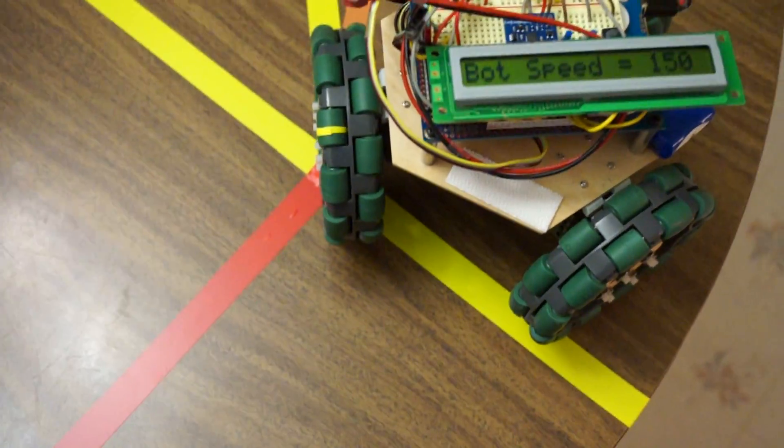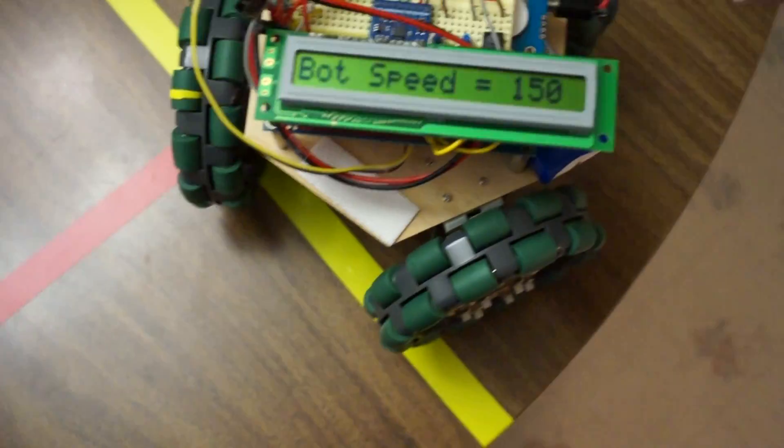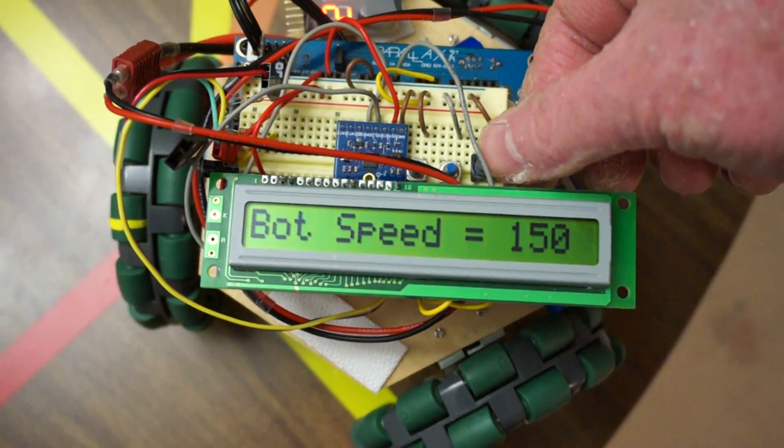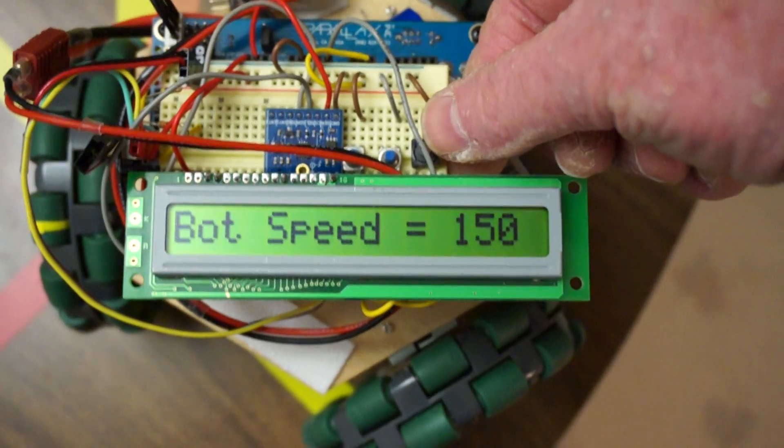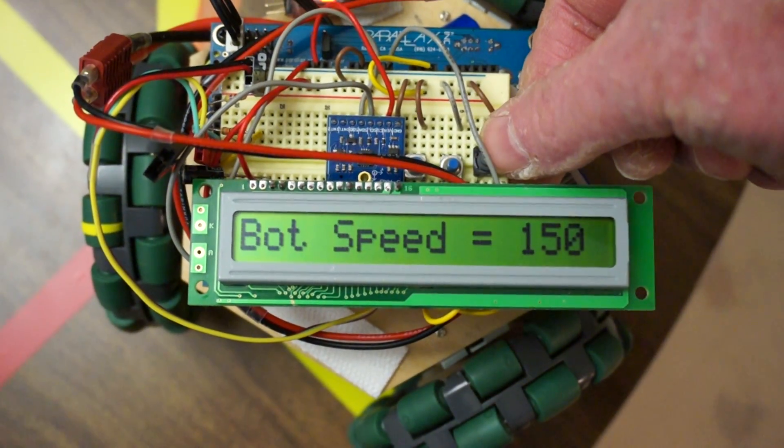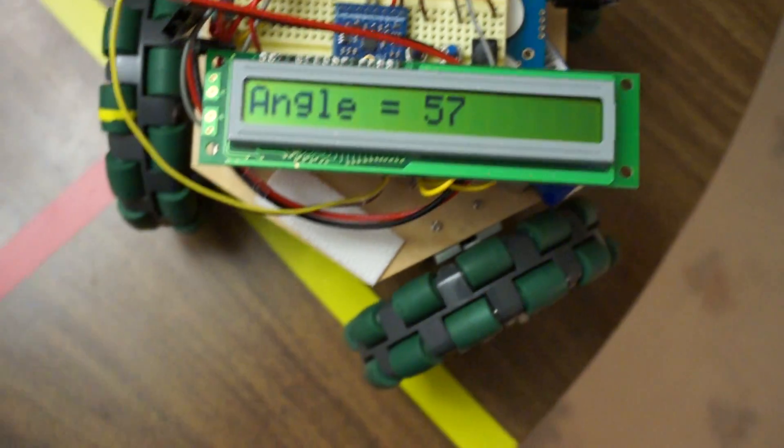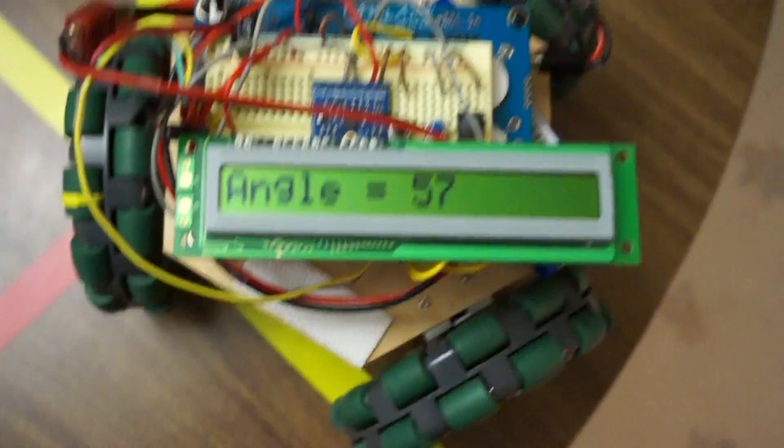And I think they go up to like 1023 or something, but we'll keep it slow. That's the wheel speed, the bot speed, not the wheel speed, it's different. So the wheel speed will be slower than the bot speed.